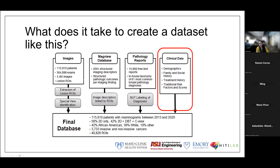Clinical data was obtained from EHR and self-reported intake forms, including ethnicity, demographics, and age. Traditional risk factors like Gail and Tyrer-Cuzick risk scores were also collected when available, though they weren't always present.